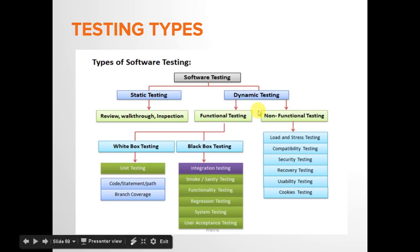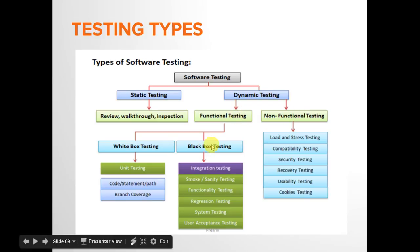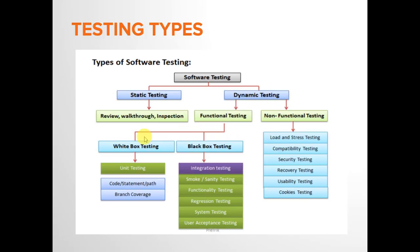Functional testing has two approaches: white box testing and black box testing. There is also a third approach called gray box testing, but it is very minimal — it's basically a combination of white box and black box and is very rarely used.